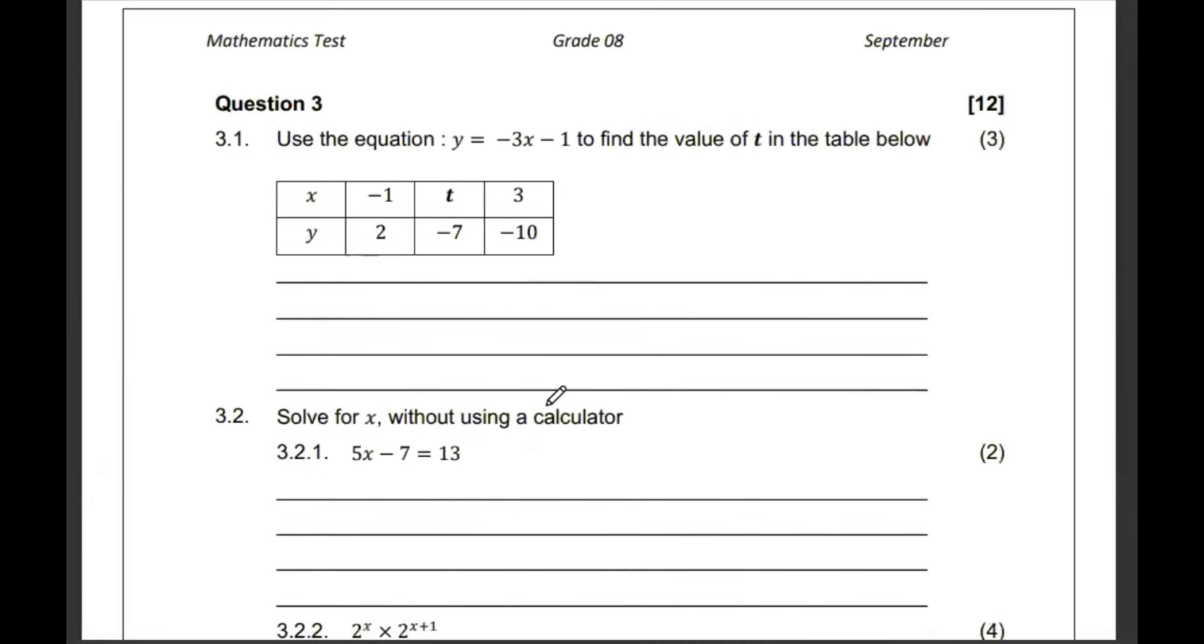Question number 3. If we're given this, they want us to get the value of t in the table. So, this is like a flow diagram. When y is negative 7, what is the x? So, negative 7 is equal to negative 3x minus 1. Negative 7 plus 1 is equal to negative 3x. This becomes negative 6 is equal to negative 3x. Then divide both sides by negative 3. Meaning that our x is going to be just a 2.